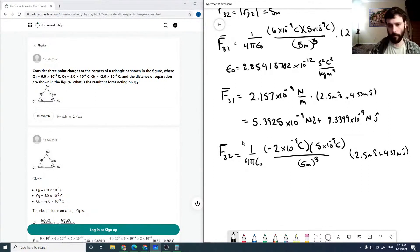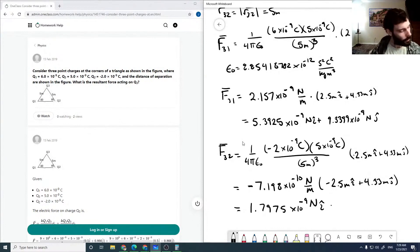This is going to be minus 7.1975 times 10 to the minus 9 newtons per meter times minus 2.5 plus 4.33, using the same epsilon naught. The minuses will cancel, so we get 1.7975 times 10 to the minus 9 newtons i hat and minus 3.1133 times 10 to the minus 9 newtons j hat.